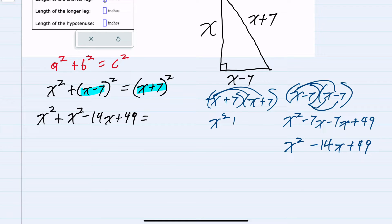Again doing the distribution x times x is x squared, x times 7 is 7x, 7 times x is 7x and 7 times 7 is 49. Combining like terms x squared plus 14x plus 49.